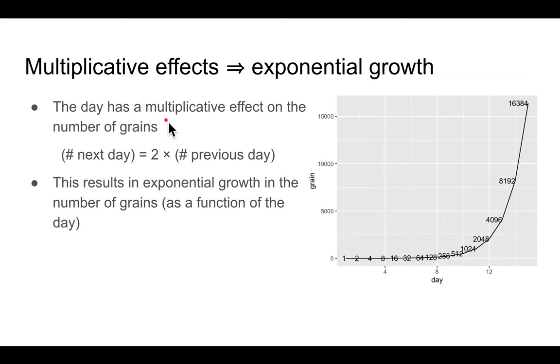And basically, the day variable has a multiplicative effect on the number of grains because every increment in day results in twice as many grains. And this results in exponential growth in the number of grains. And I've plotted that in the graph here. And I've also labeled it with the numbers. And you can see very clear, this is a typical exponential growth curve.